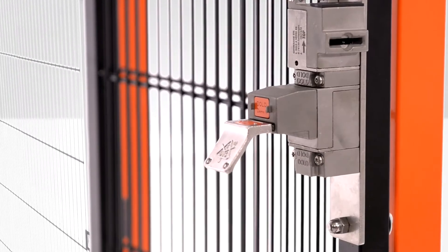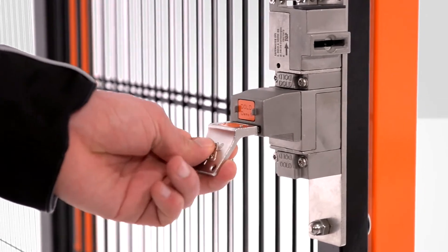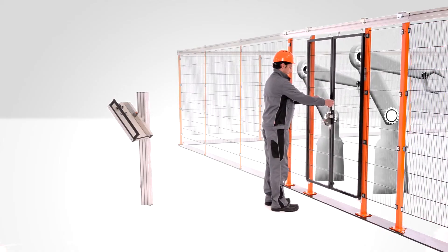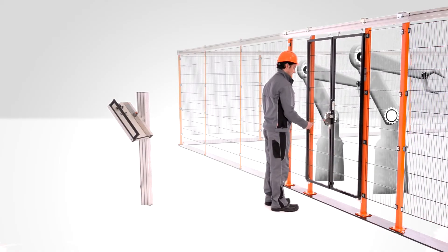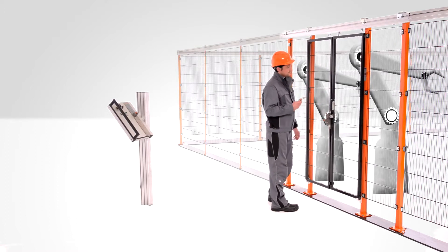The key can only be removed again once the facility is locked. While the key is being used by Sam as he carries out the maintenance work, the machine cannot be started.